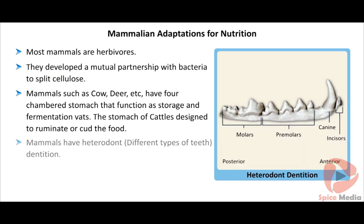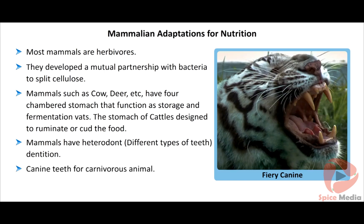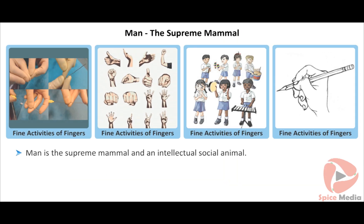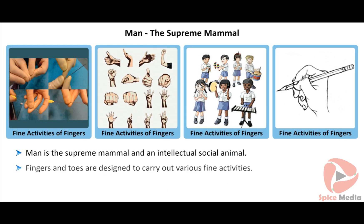Mammals have heterodont, i.e. different types of teeth, dentition. Canine teeth of carnivorous animals help to tear the food. Incisors of an elephant are modified into tusks, which help to carry heavy loads and often serve as defense.